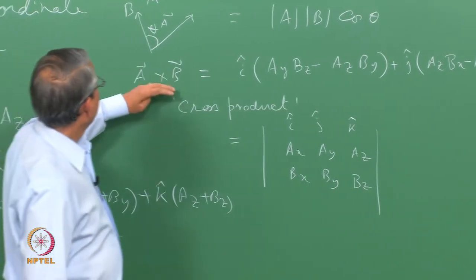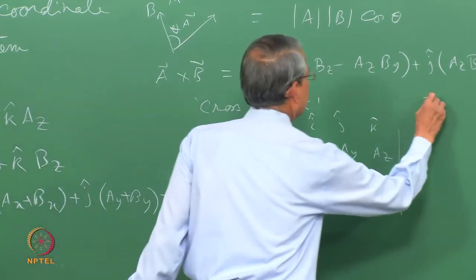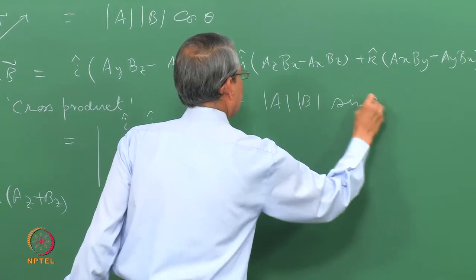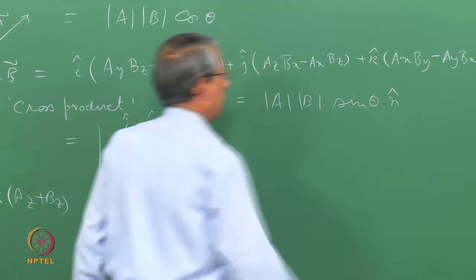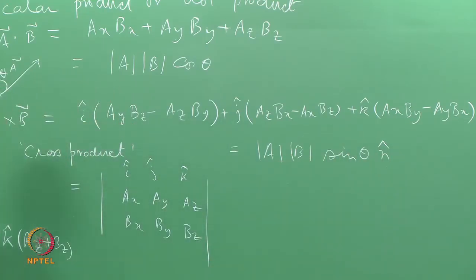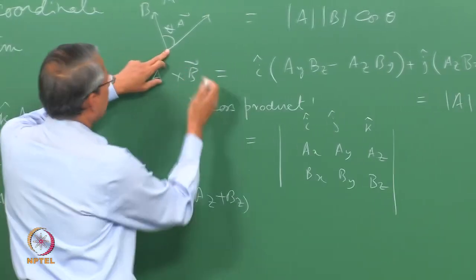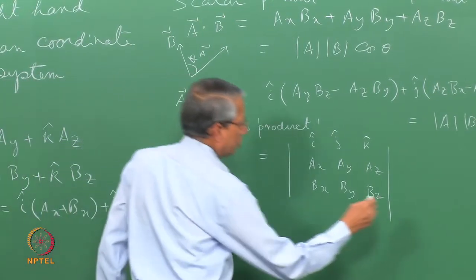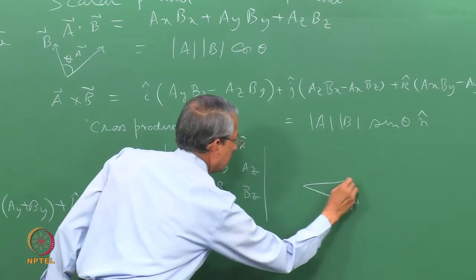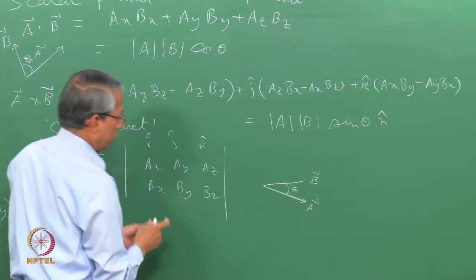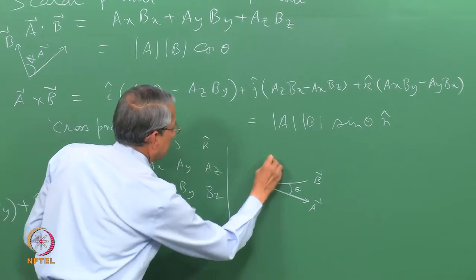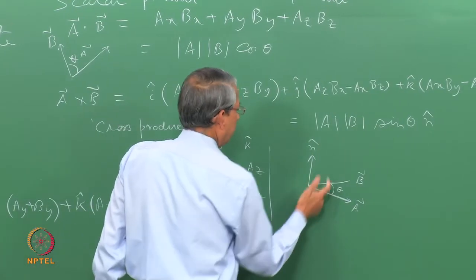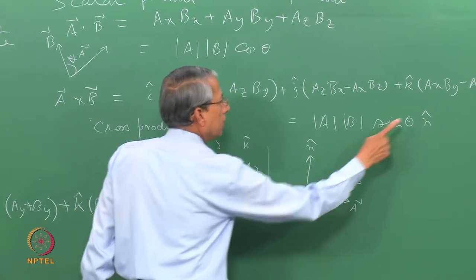Analogously, the cross product can also be written as the magnitude of A times the magnitude of B times sine theta, times a unit vector n-hat in a direction perpendicular to both vector A and vector B, following the right-hand rule. So this unit vector points perpendicular to the plane containing A and B, in the direction given by the right hand when going from A to B.